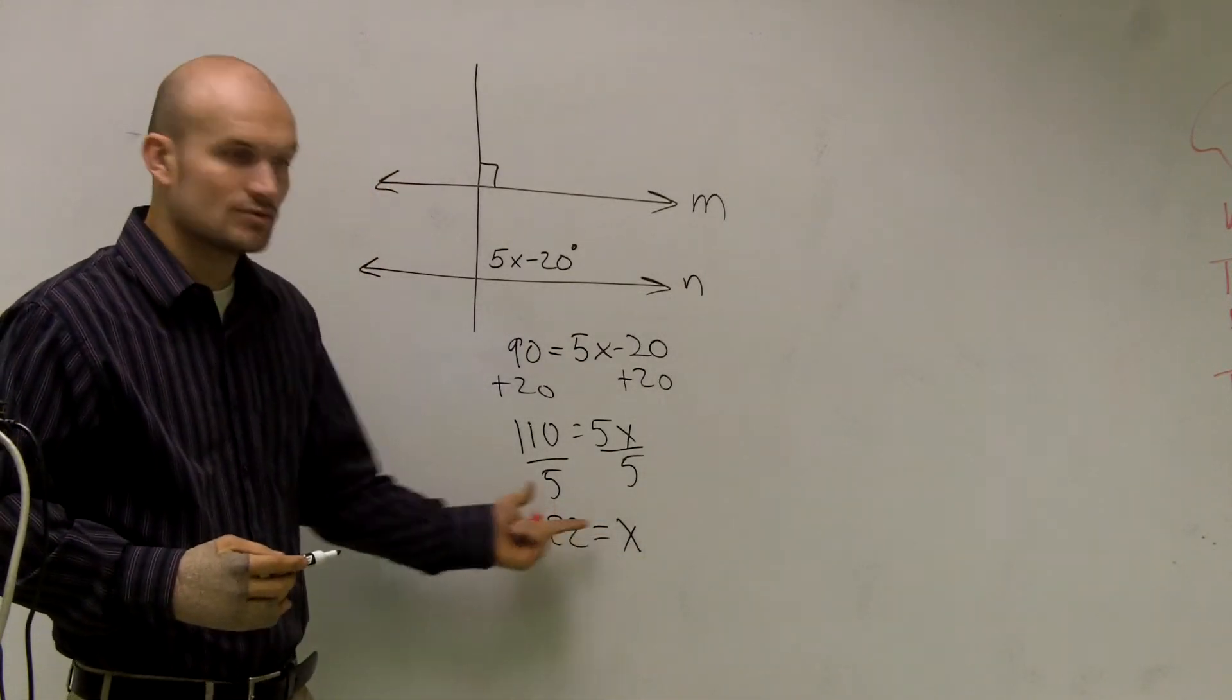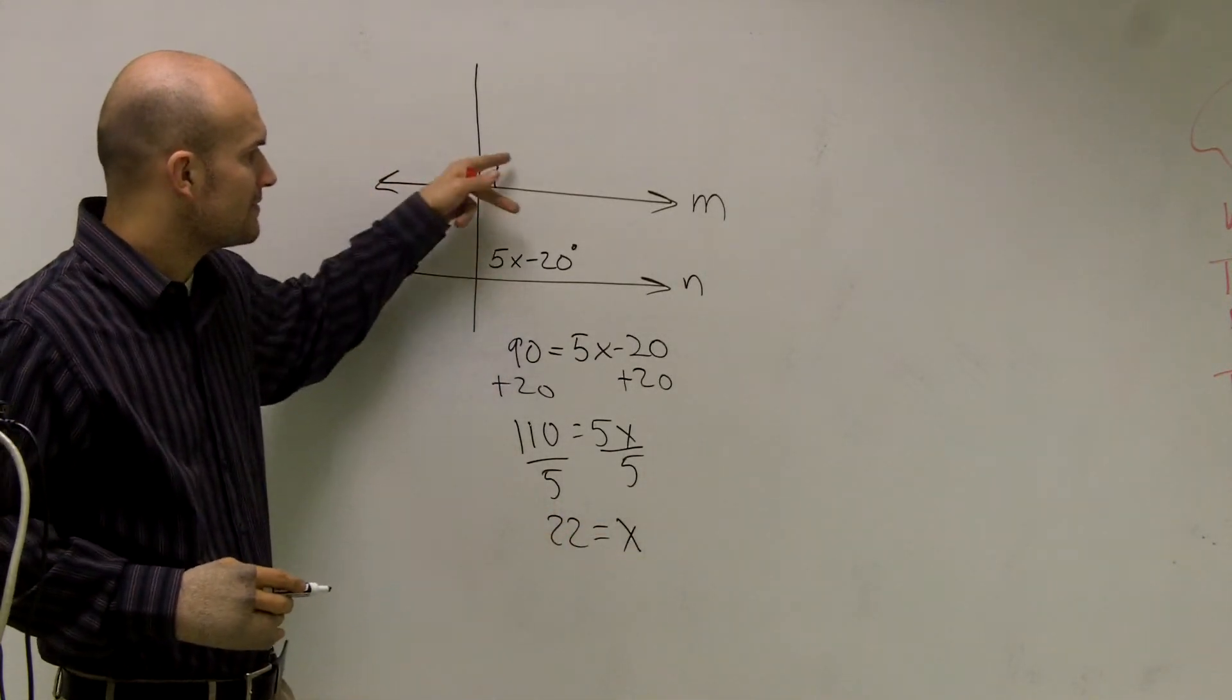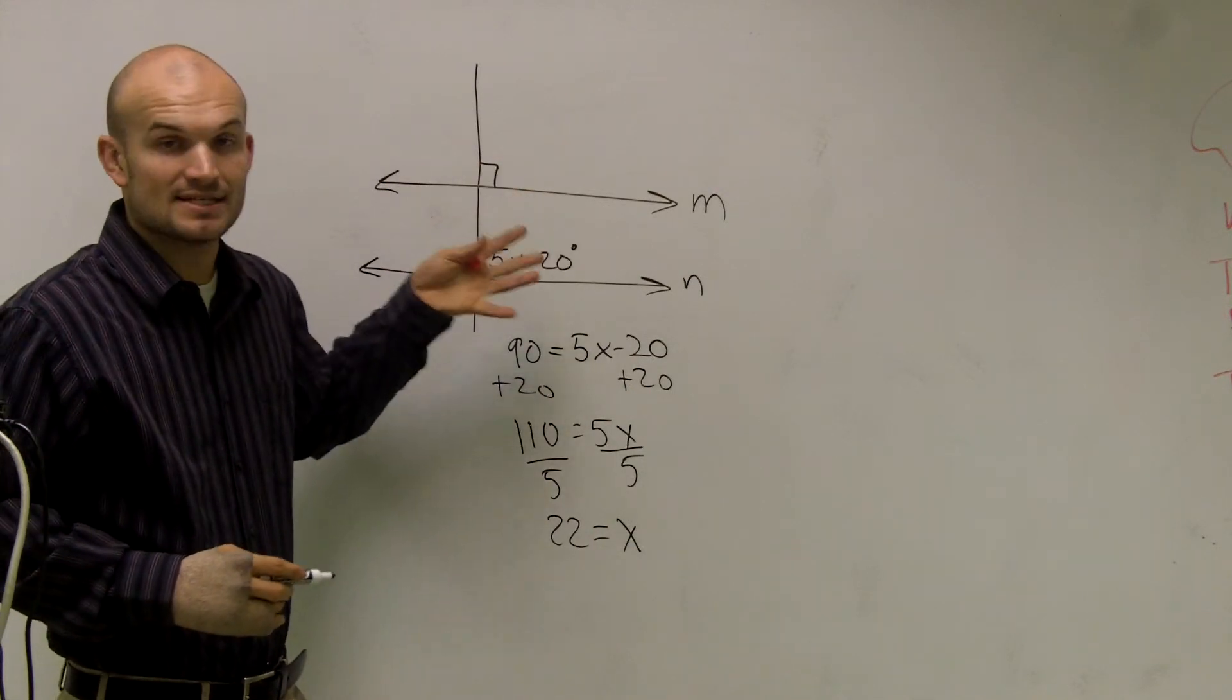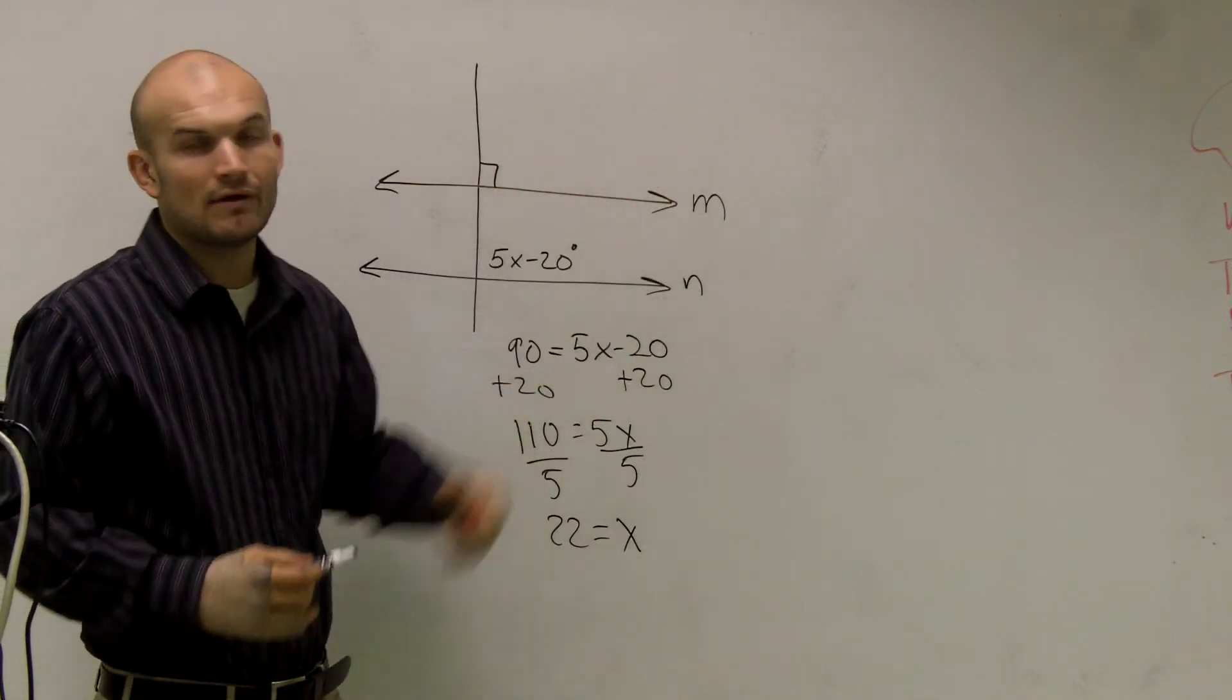Therefore, when x is equal to 22, these two angles are equal to each other. And since they're corresponding angles, I will have parallel lines.